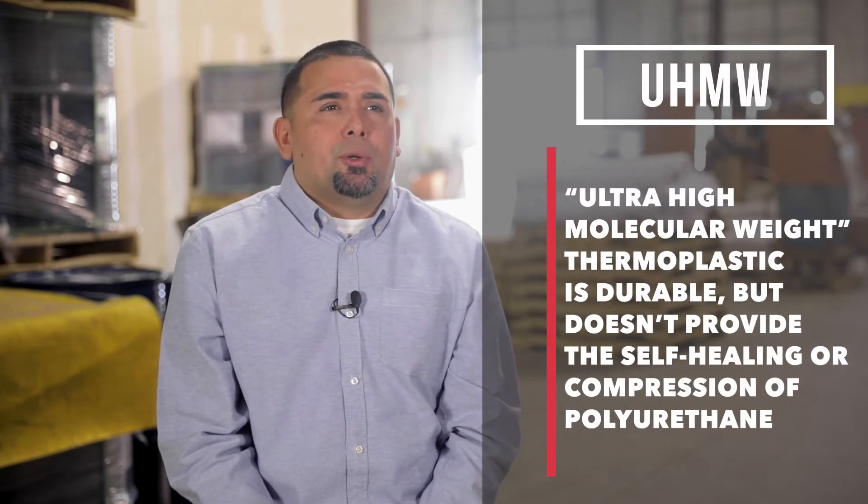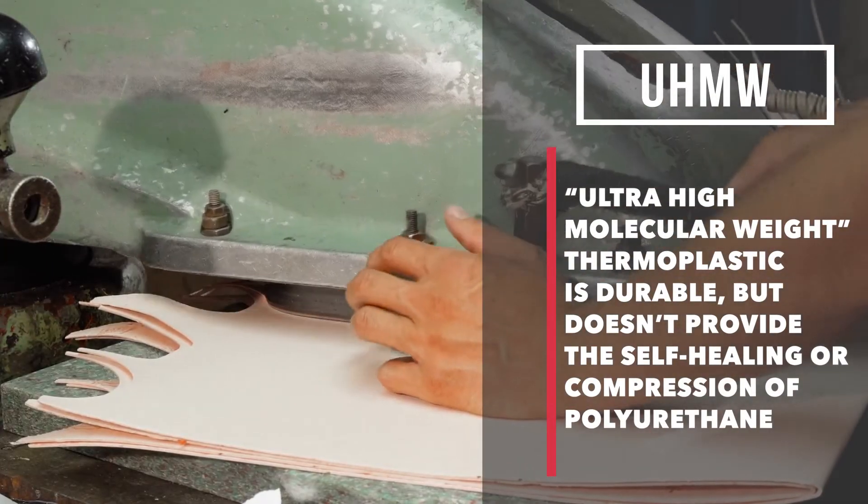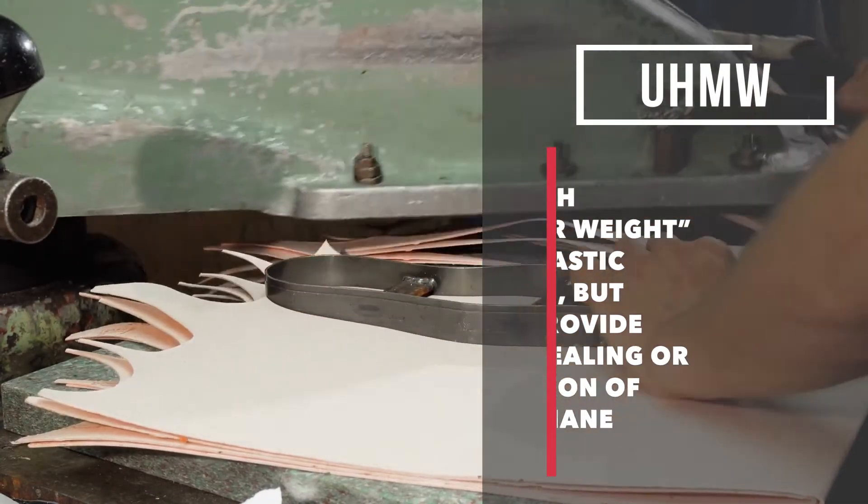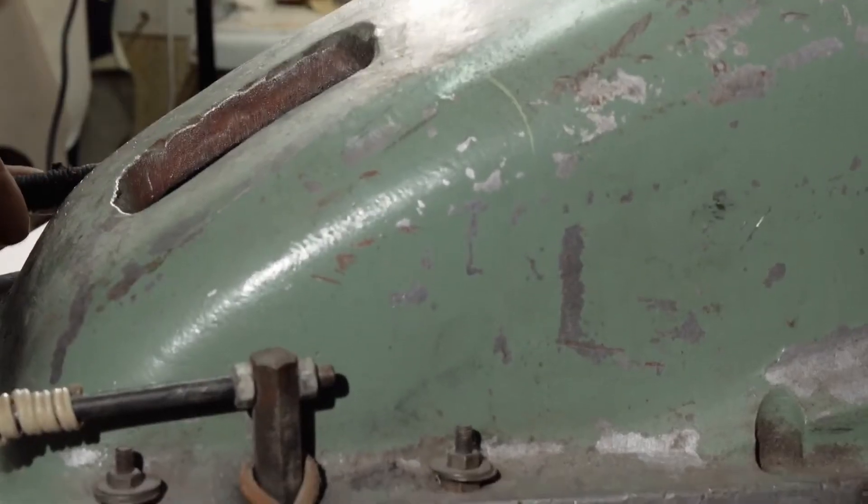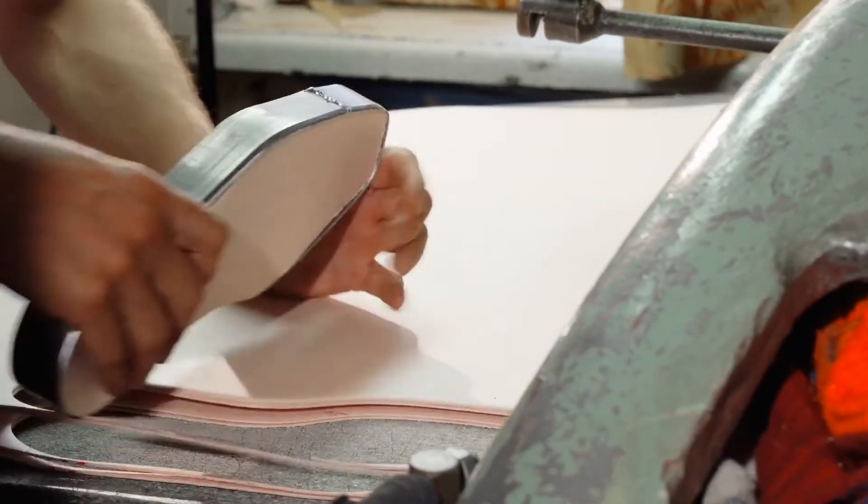Usually being UHMW, it's not holding up to the application and tends to get chewed up. They're using pads to cut against, and the sharp die runs into the pad causing the breakdown of the UHMW, whereas the self-healing properties of urethane last a whole lot longer, with a life cycle of that part ten times over UHMW.